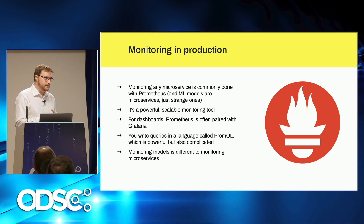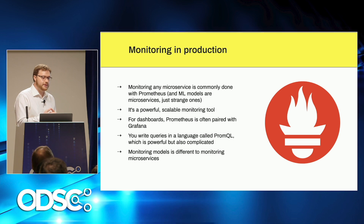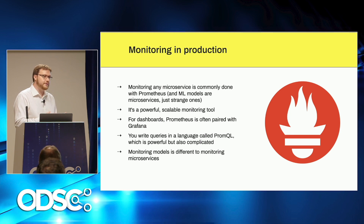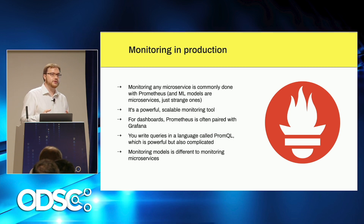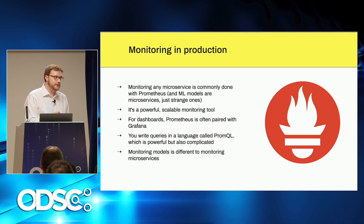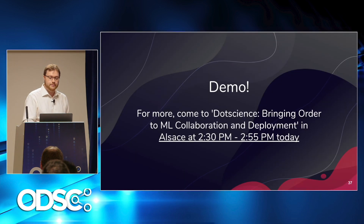Once your model is running in production — and I could talk for hours about Kubernetes but I won't — monitoring that model can be done with a tool called Prometheus. Prometheus has a sister project called Grafana for doing dashboards. You can create these dashboards using a language called PromQL, which is a query language for the Prometheus database. You can instrument your model with Prometheus metrics, which allows it to look at the distribution of predictions that model is making. Then you can use Grafana to query that. Monitoring models is different from monitoring microservices — you really want to be looking at things like the distribution of classifications that model is making in production.